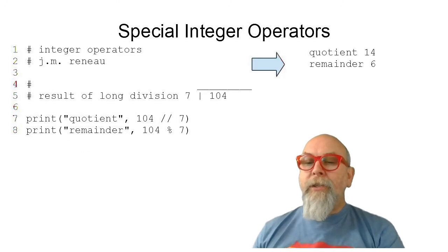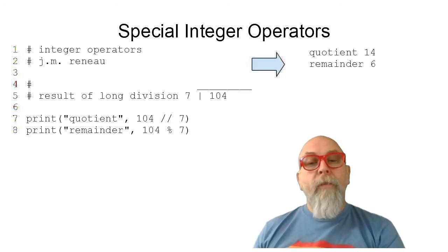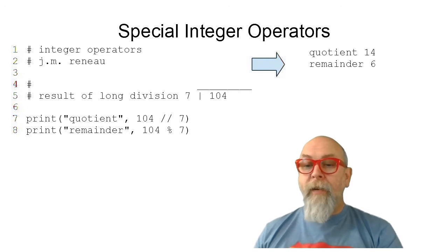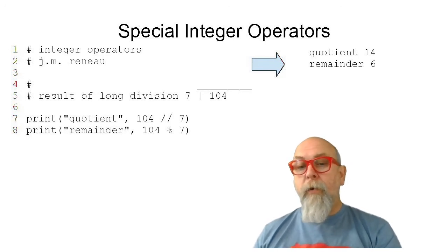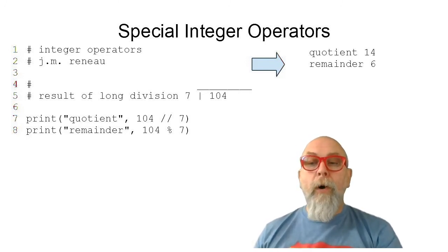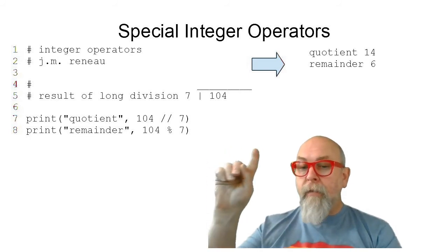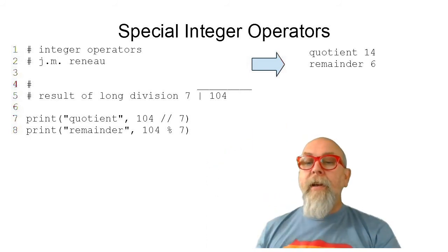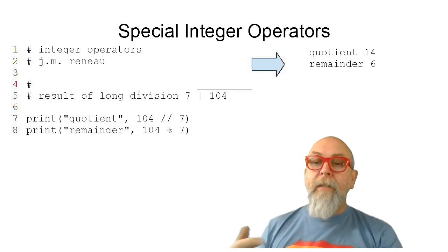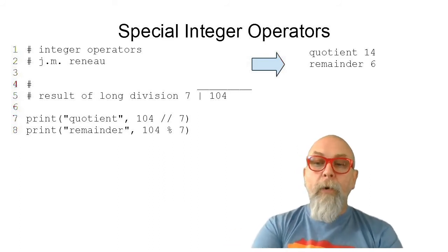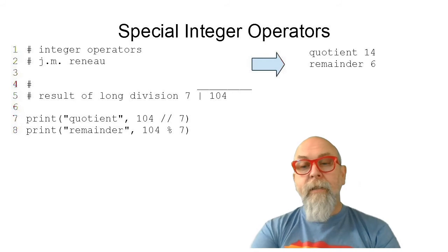Let's see those two integer division operators at work. For instance, if you were given the problem of divide 104 by 7, or 7 goes into 104, you can see that the quotient is 14, and the remainder of that division would be 6. So 7 times 14 plus 6 would be equal to 104.